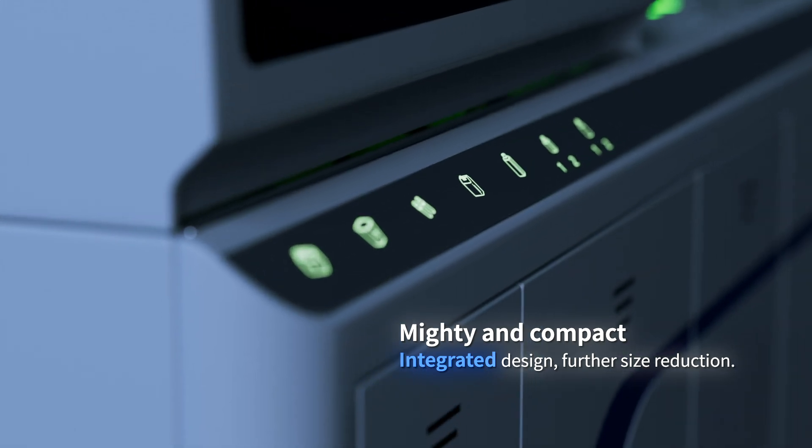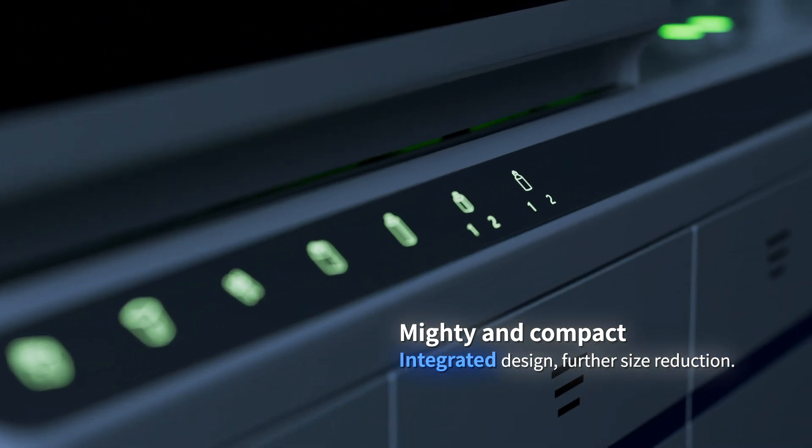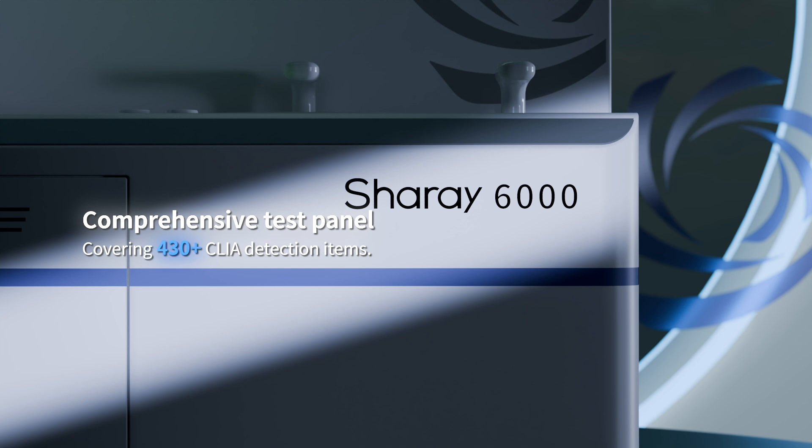Its integrated design contributes to further size reduction. Shurei 6000 enjoys a comprehensive test panel, covering over 430 CLIA detection items.